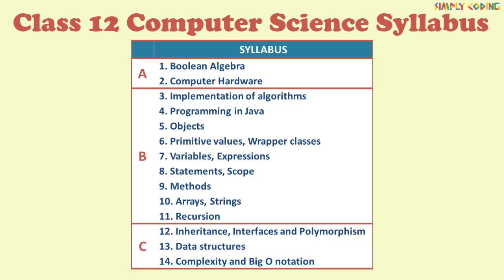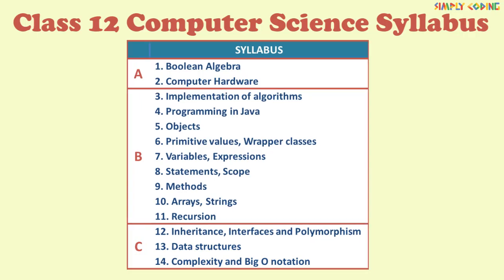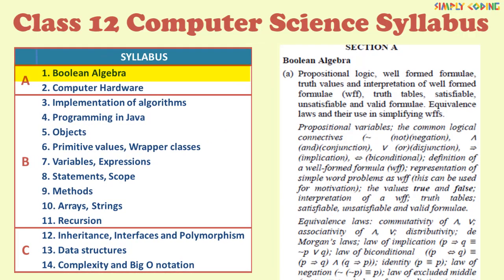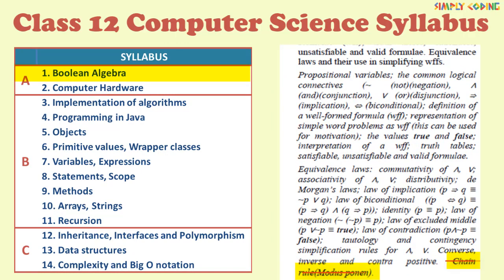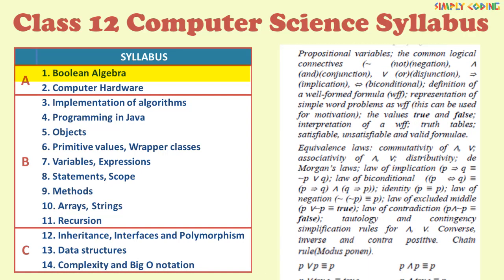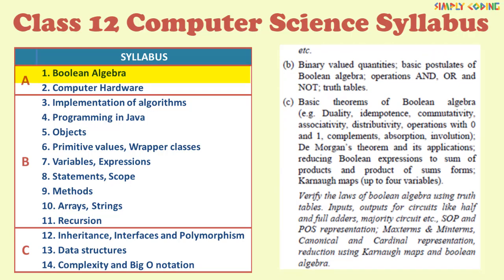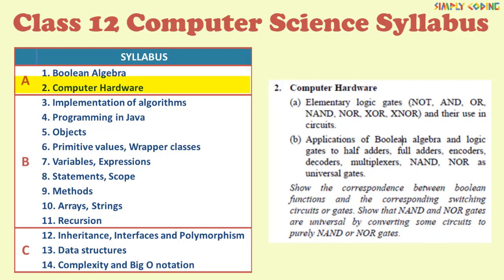Now let's see how the syllabus has been reduced by the board. In Boolean algebra only chain rule and more respondents has been removed. Everything else remains the same. In computer hardware there is no change at all, so the syllabus for section A is almost the same.